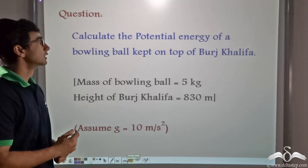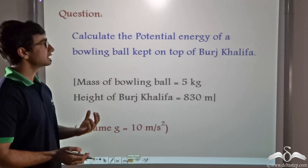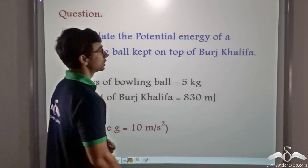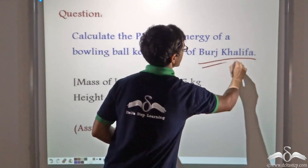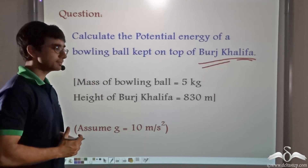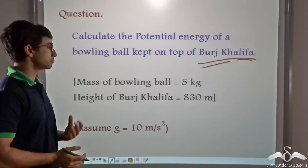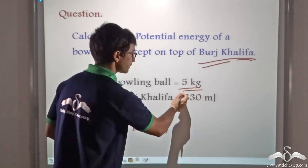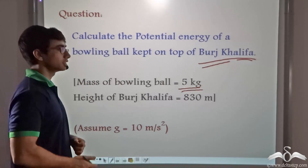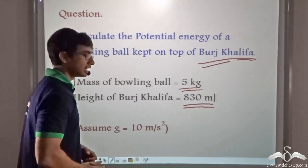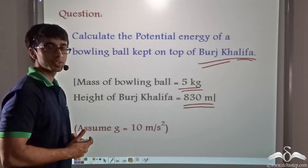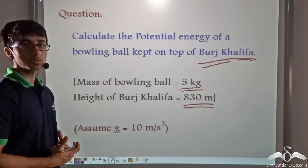Here is a question: calculate the potential energy of a bowling ball kept on top of Burj Khalifa, the tallest building in the world. The ball is at quite a height and must have a significant amount of potential energy. We are given that the mass of the bowling ball is 5 kg, the height of Burj Khalifa is 830 meters, and g is equal to 10 m/s² for ease of calculation.